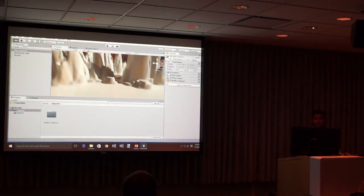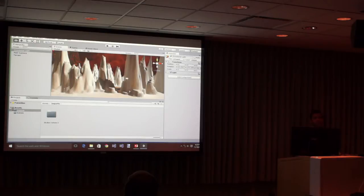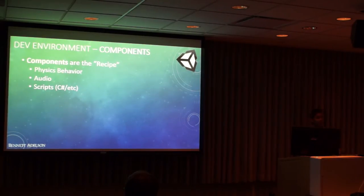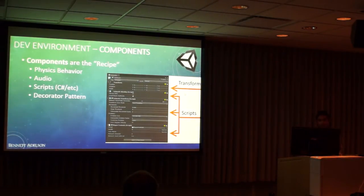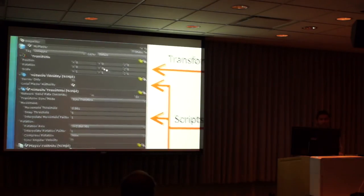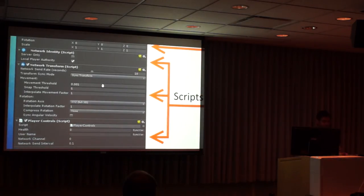So we have these game objects that are not doing anything right now — not moving or anything. How do we actually get these things to be active or moving? Components are key to that. What do components add to the system? They add physics behavior, they can add audio, and they will add scripts as well. They give you the capability to add C# and attach scripts to these objects in the world.